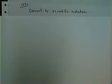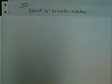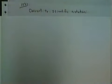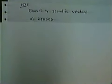You might ask: what do you mean by large and small? Large is anything with an absolute value over 1. Small is anything whose absolute value is under 1. Let's look at the first example.